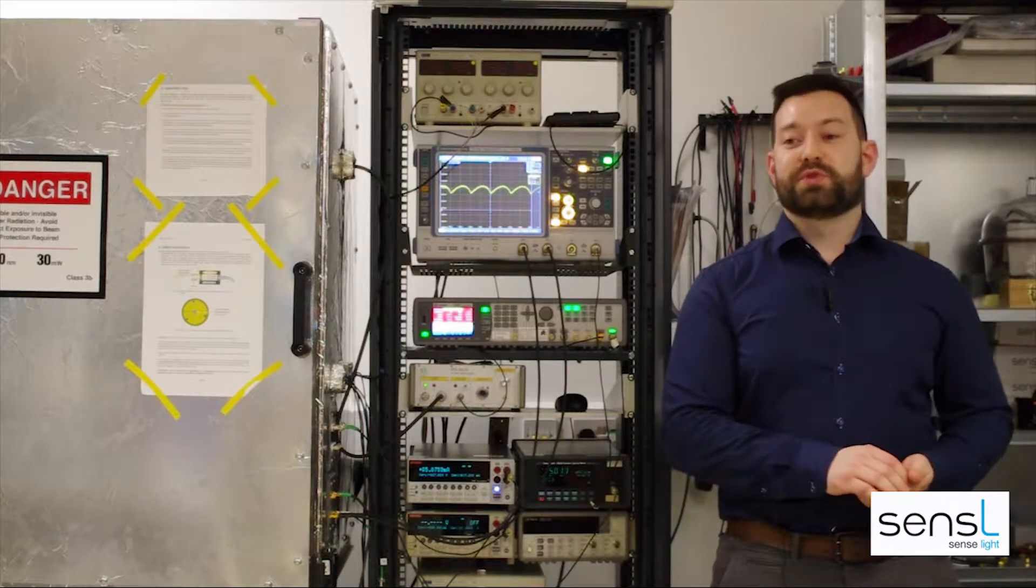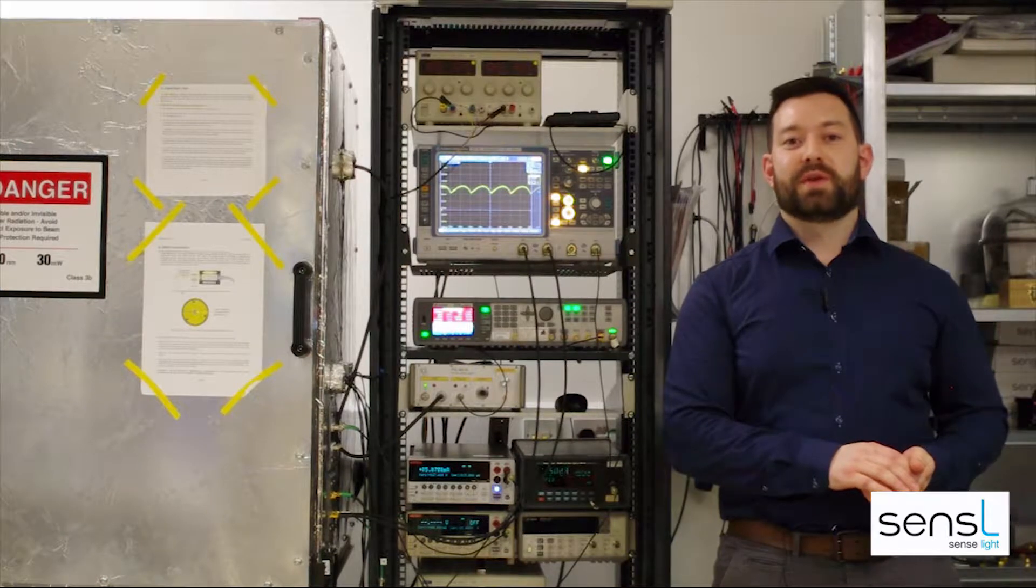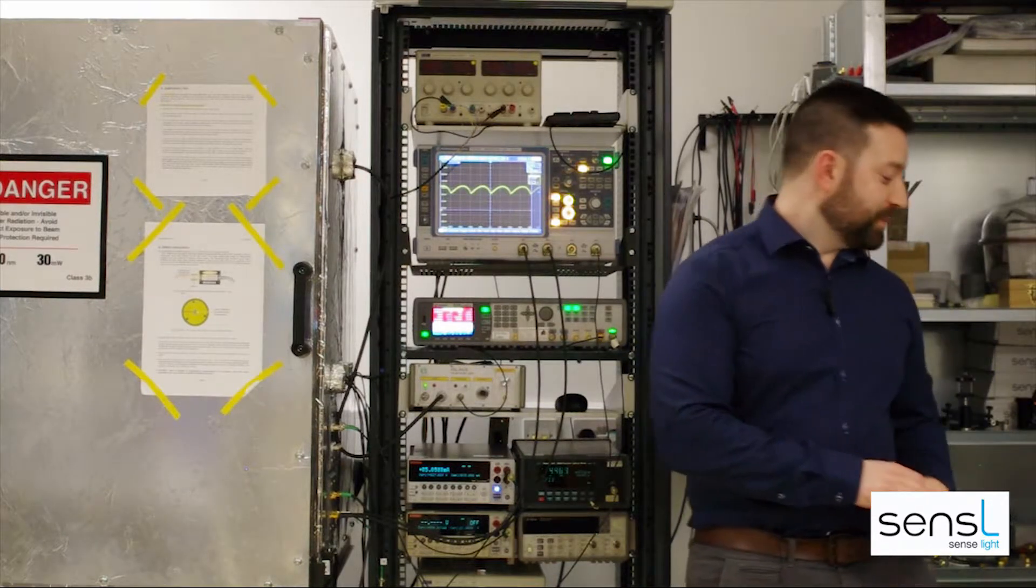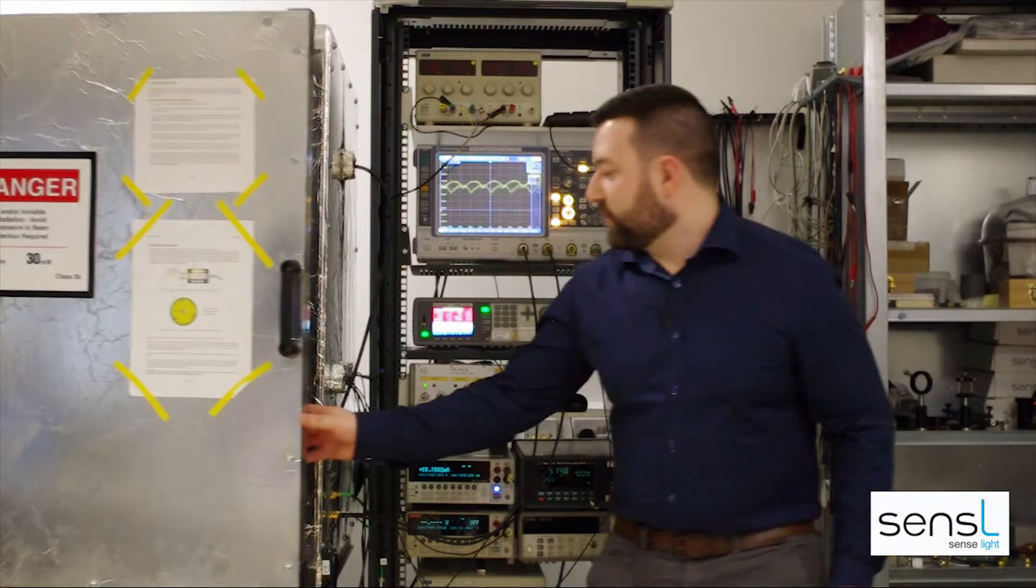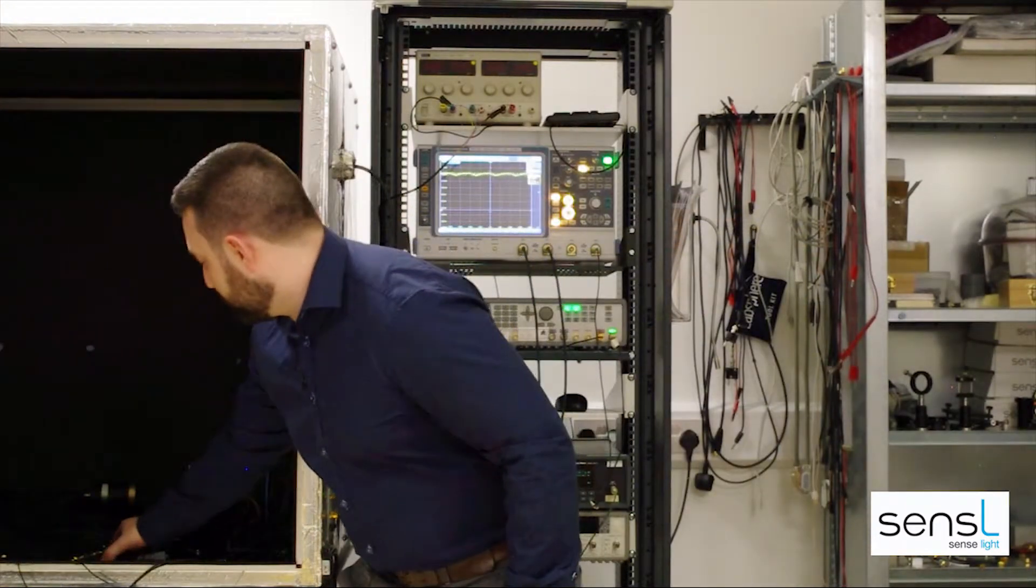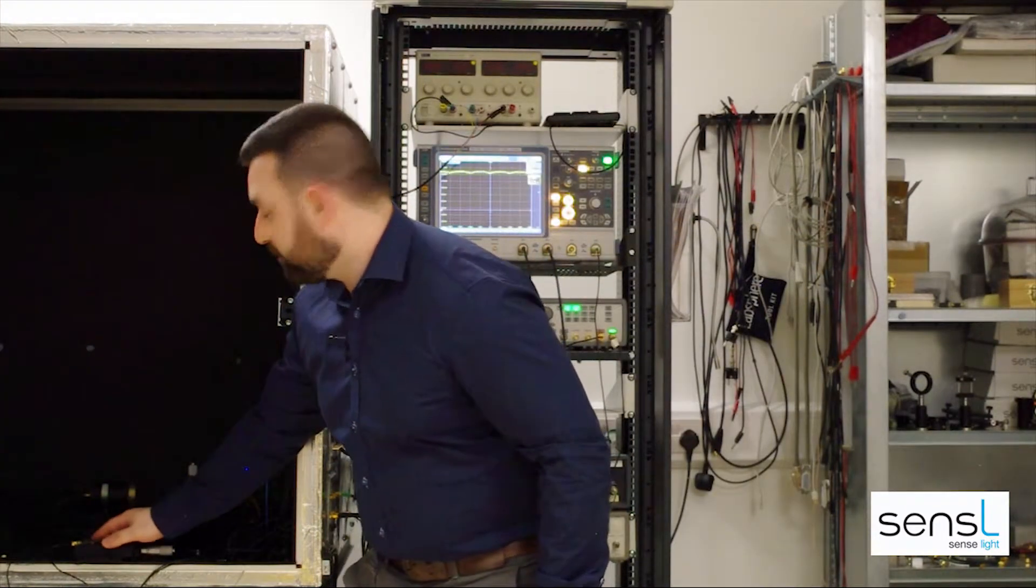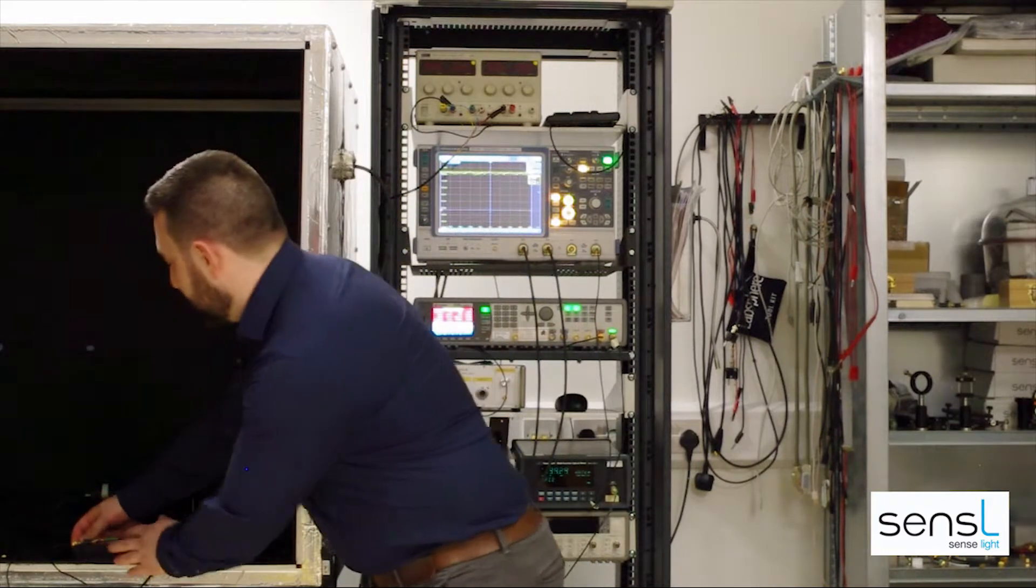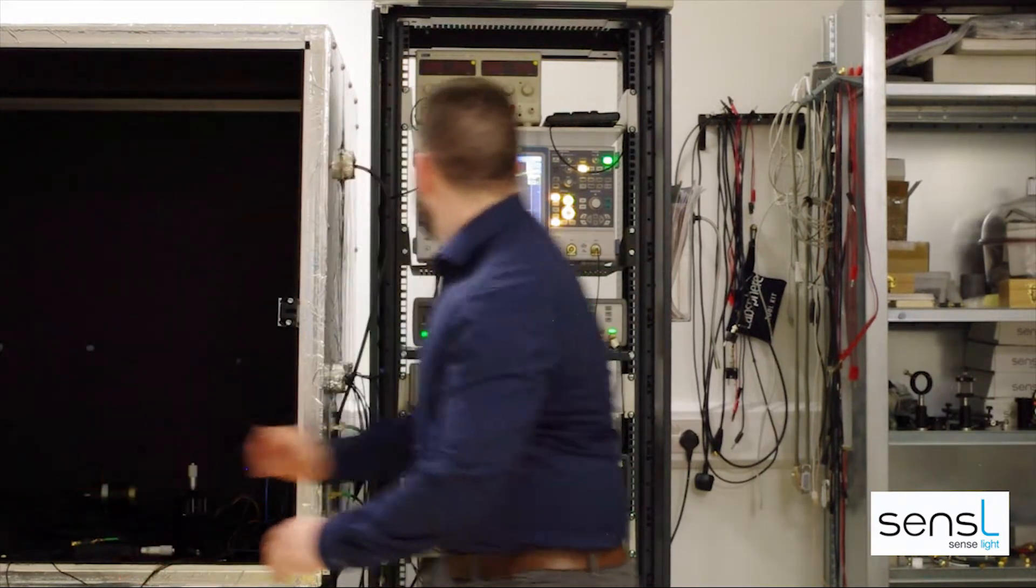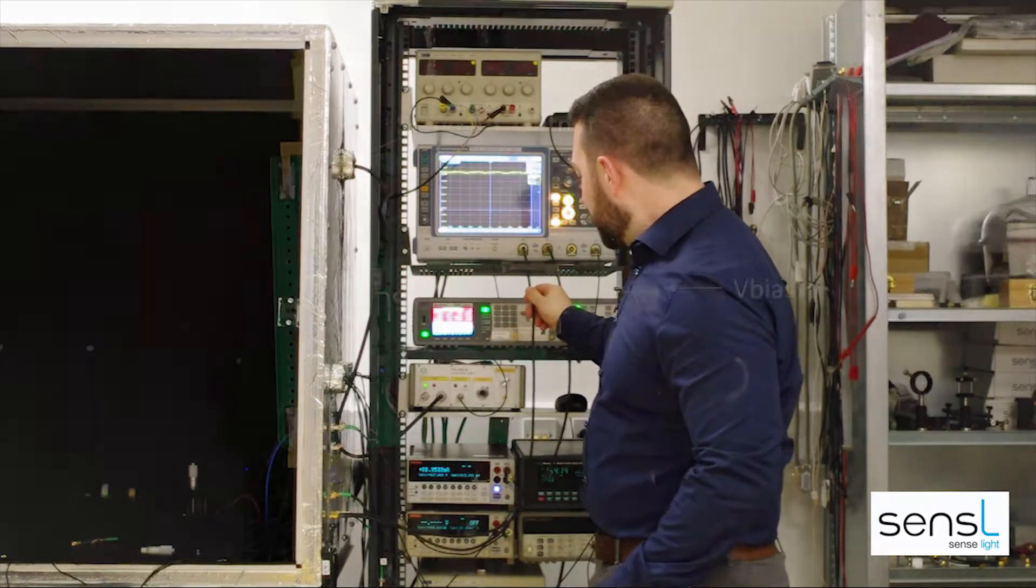The first measurement we're going to do today is to measure the mains frequency in fluorescent lighting. To do this, we first connect our board onto some optical breadboard for stability and then connect the standard output to the oscilloscope using an SMA cable.